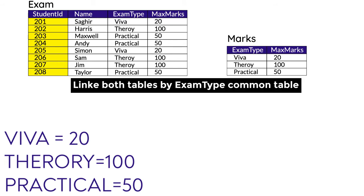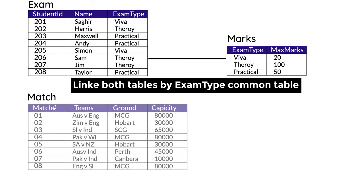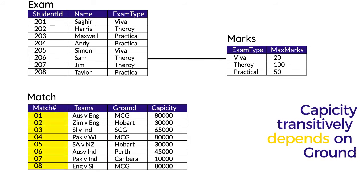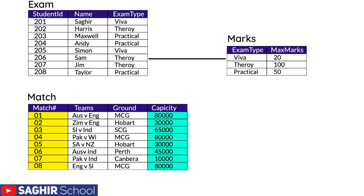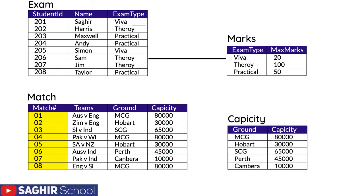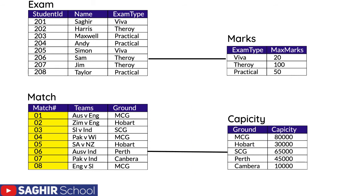Transitive dependency is a bit tricky, so let's see another example. Here, match number is the primary key; teams, ground, and capacity are the non-primary key columns. It is clear that if a match is played in MCG, the capacity is 80,000; if played in Hobart, it's 30,000. So if match number nine is played in MCG, we'll automatically put 80,000 in the capacity column — capacity is transitively depending on ground, again violating Third Normal Form.